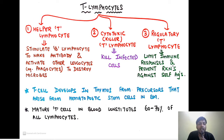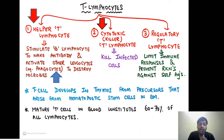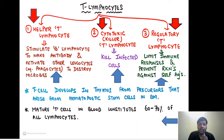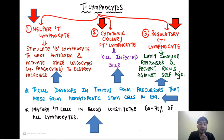By assessing antigen receptor gene rearrangements using RT-PCR, we can assess lymphoid neoplasms: polyclonal populations are non-neoplastic and monoclonal populations are neoplastic. T lymphocytes are of three main types: helper T lymphocytes, which stimulate B cells to make antibody and activate phagocytes; cytotoxic/killer T cells, which kill infected cells; and regulatory T cells, which limit the immune response. T cells develop in the thymus from precursors arising in the bone marrow hematopoietic stem cells, and constitute approximately 60–70% of all blood lymphocytes.